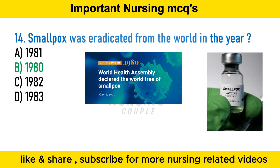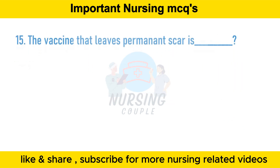Smallpox is an acute contagious disease caused by the variola virus, a member of the orthopoxvirus family. For centuries it was one of the world's most dreaded plagues, killing as many as 30% of its victims, mostly children. Survivors were permanently immune but faced lifetime disfigurement and sometimes blindness. Smallpox was one of the first diseases controlled by a vaccine, following the work of English physician Edward Jenner in 1796. In 1967, WHO began a global vaccination program, and in 1980 the disease was officially declared eradicated.